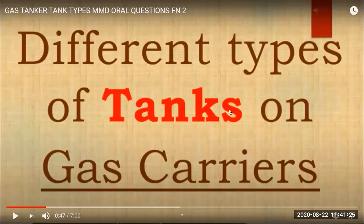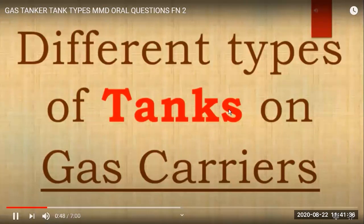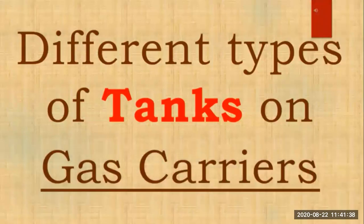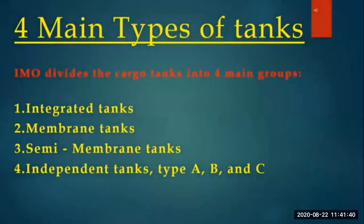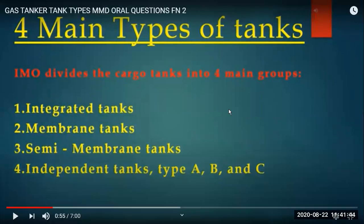We start with different types of tanks on gas carriers. Generally we have very simple integrated tanks on chemical and oil tankers - that is integrated gravity tanks - but we have very different tanks on gas carriers because cargo is carried in either highly pressurized, or semi-pressurized, or fully refrigerated tanks, which have high stresses on the tanks.